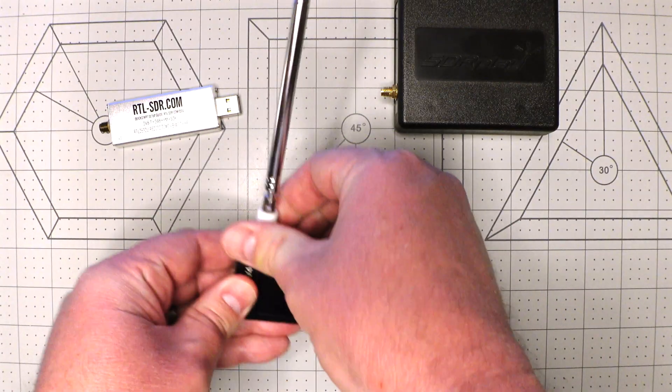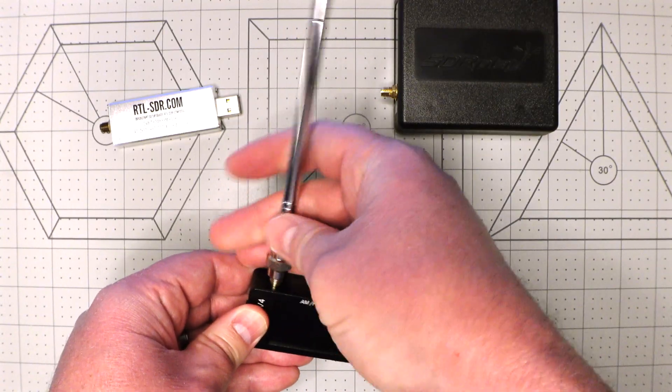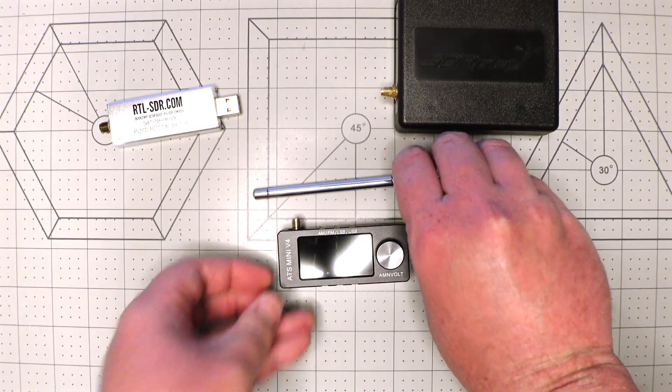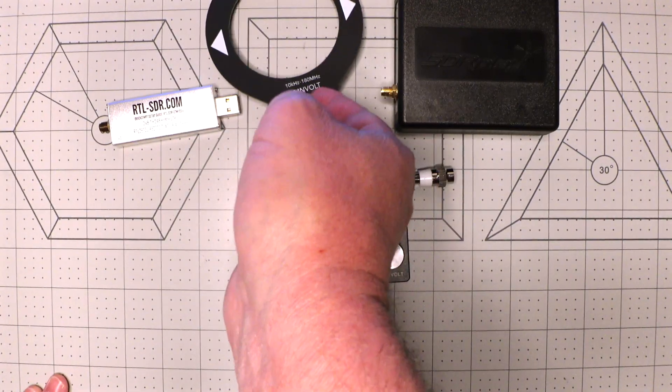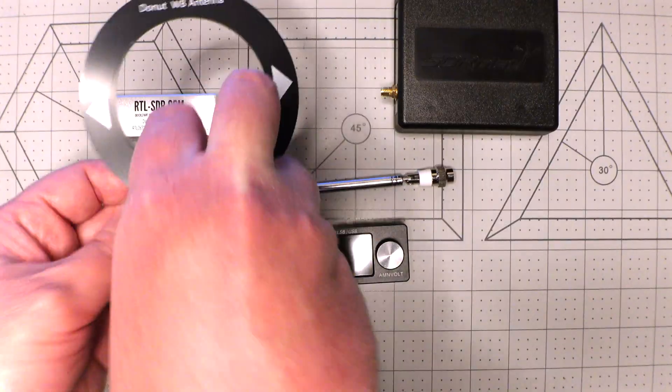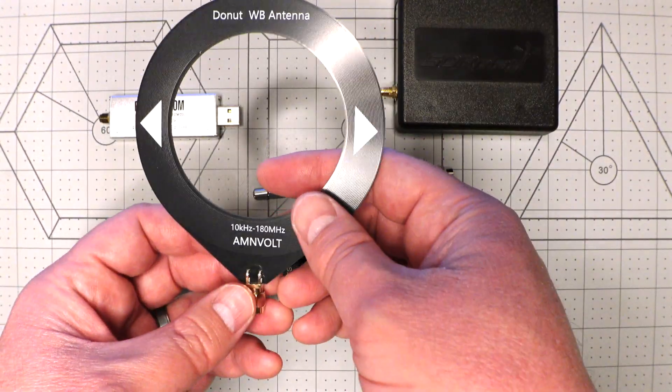It does come with two antennas. It comes with this telescopic one, which I'll take off just so you can see it in its entirety, and it comes with this one, which you might think is a magnetic loop. It's not. This is just a wire that's coiled around in a loop. They call it a donut WB antenna.